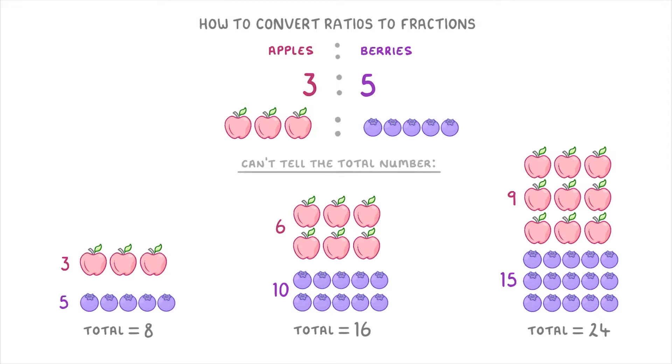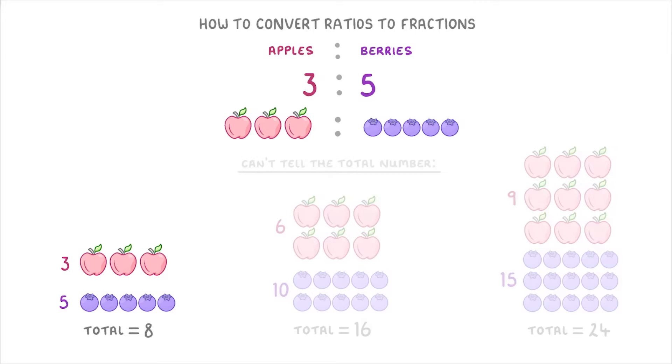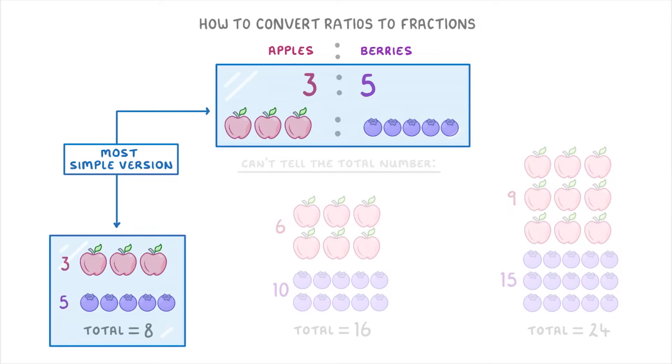For the sake of converting it into a fraction though, we don't really need to worry about any of this. We can just act as though there's 3 apples, 5 berries, and 8 pieces in total, because this is the most simple version.